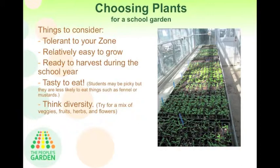Think about things that are tasty to eat. Students might be picky, and they'll certainly learn to try things they don't think they like and realize they actually taste pretty good when they grow them themselves. Try to stay away from things that have a really strong flavor — for example, fennel or some of those mustard plants. Be open to what students say they like, and think about things they might be willing to try, especially those that are really good for them, like leafy greens.